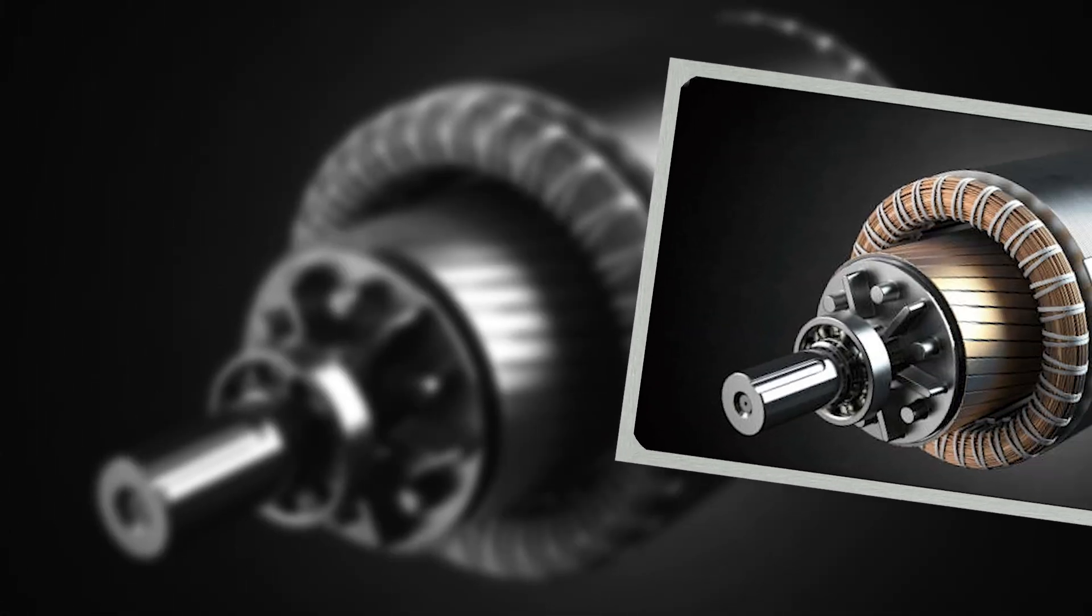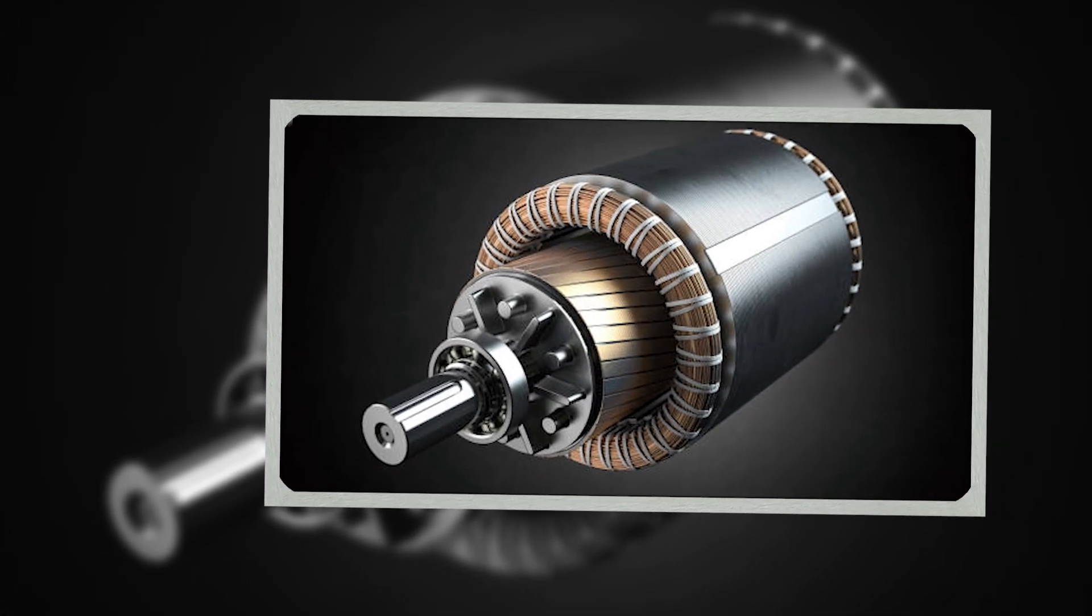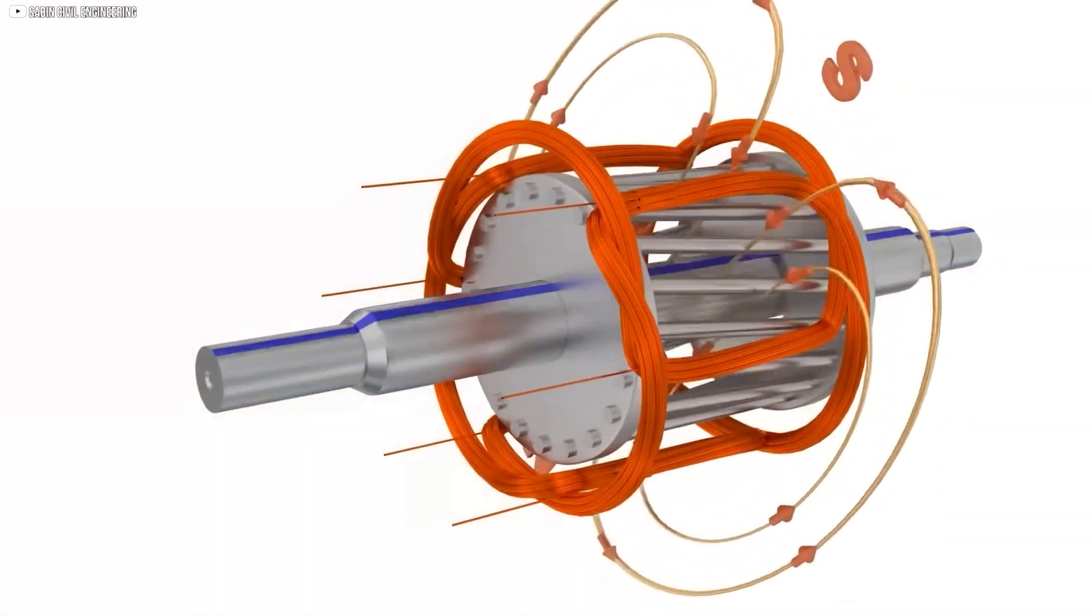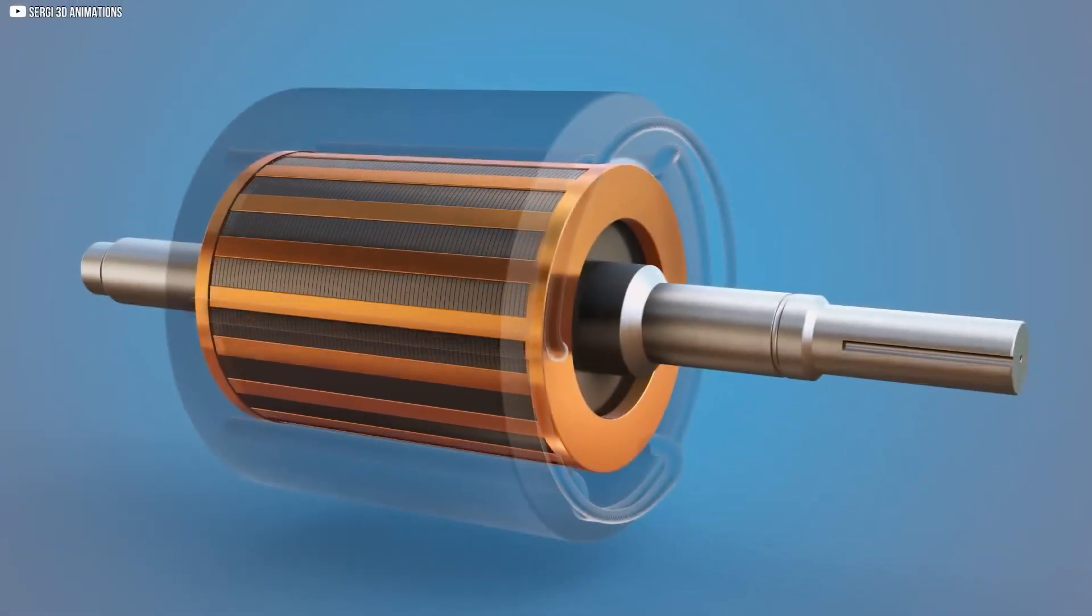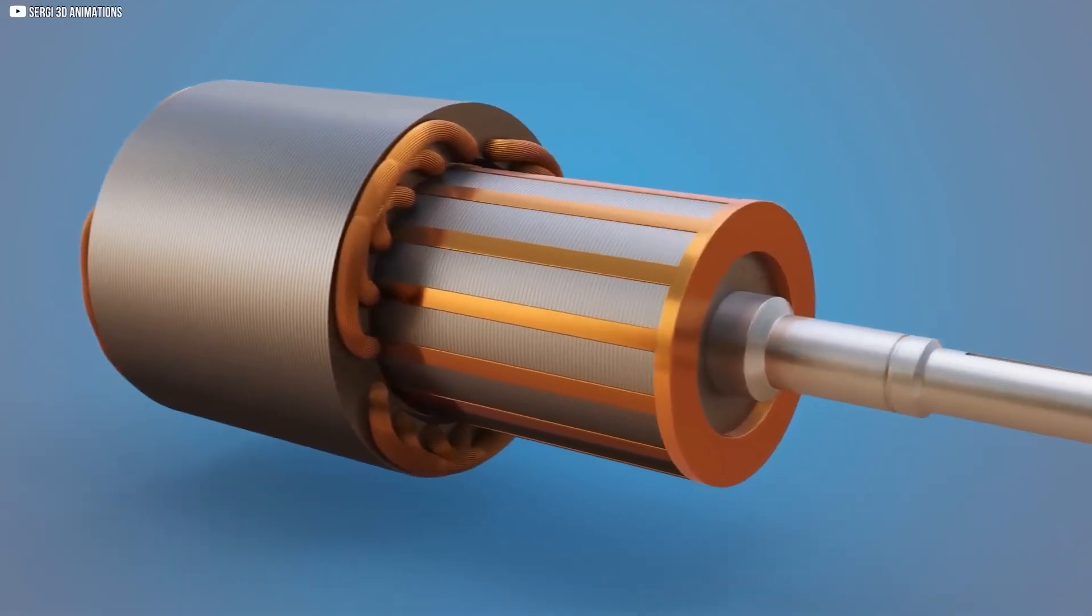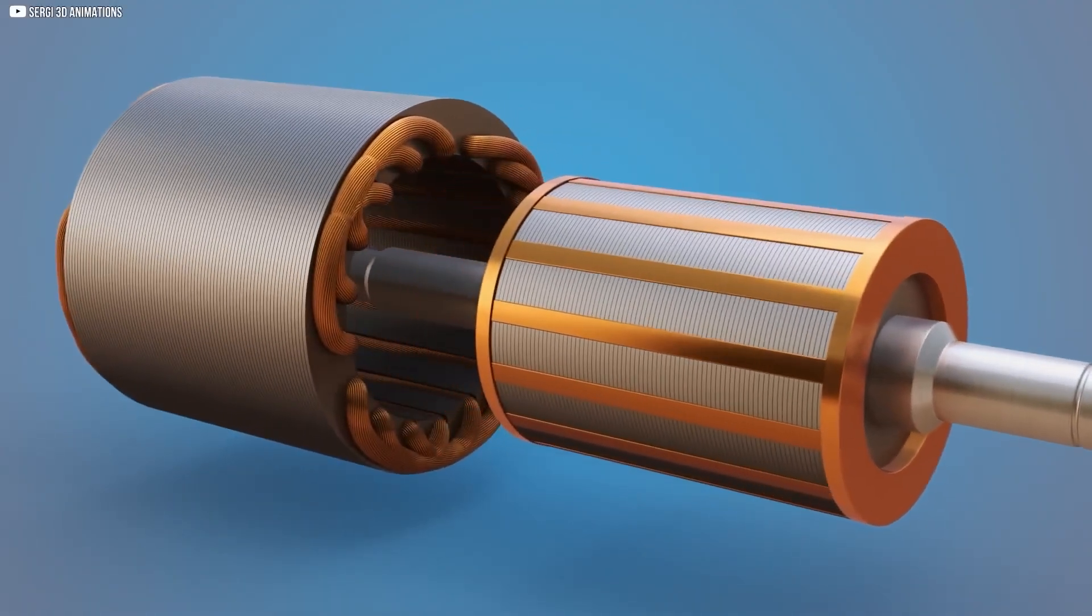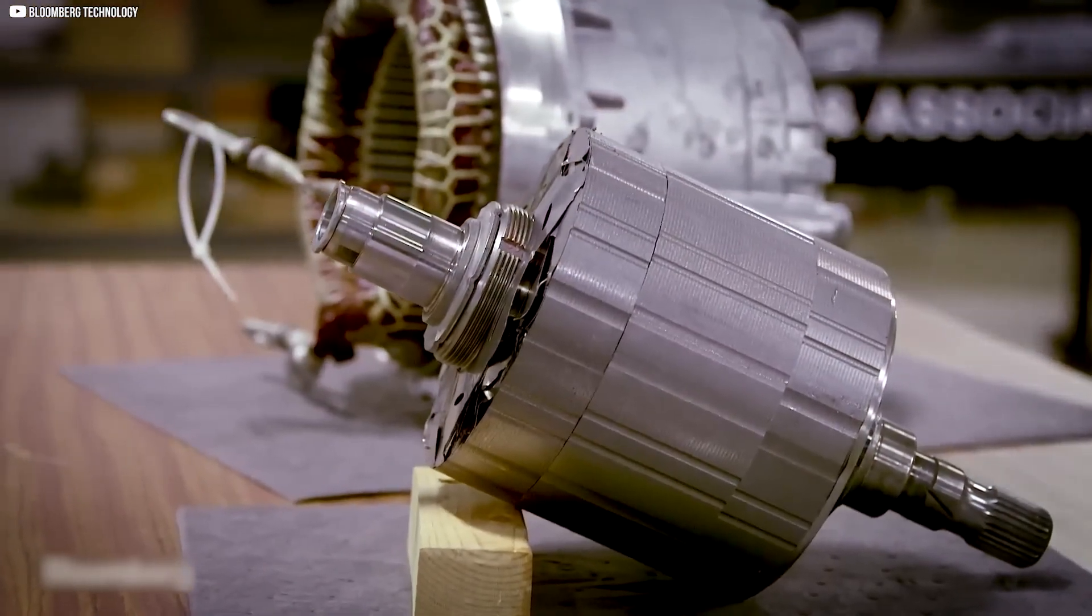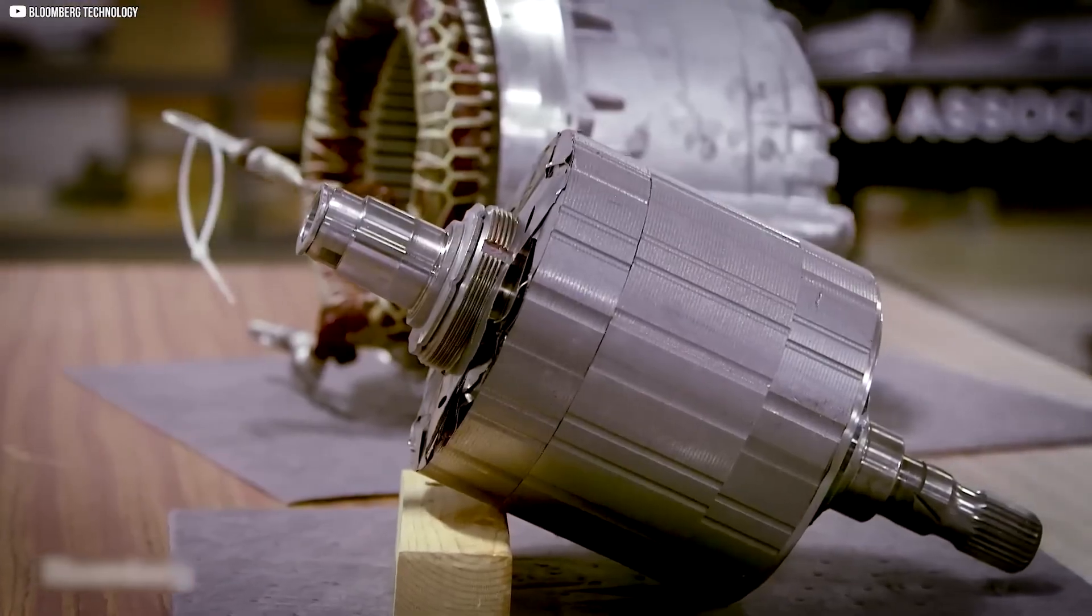In real-world motors, torque is the key to how fast and efficiently the motor operates. The more loops you have and the more power you can send through the system, the faster and stronger the motor's rotation becomes. But there's one more factor to consider, the motor's design. Let's take a look at how motors are built to manage all this power and keep things running smoothly.